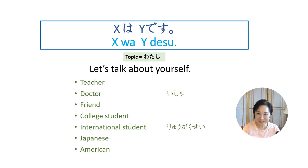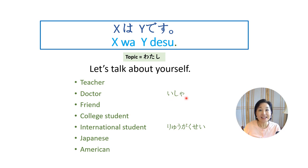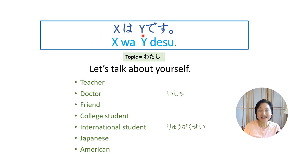The more words you know, the more sentences you can create. Let's use this sentence structure and replace Y with different nouns as you talk about yourself. Let's pretend you're a doctor — the word for doctor is isha. Watashi wa isha desu. Let's say you're a college student: watashi wa gakusei desu, or daigakusei desu. How about 'I am American'? わたしはアメリカ人です。 いいですね。